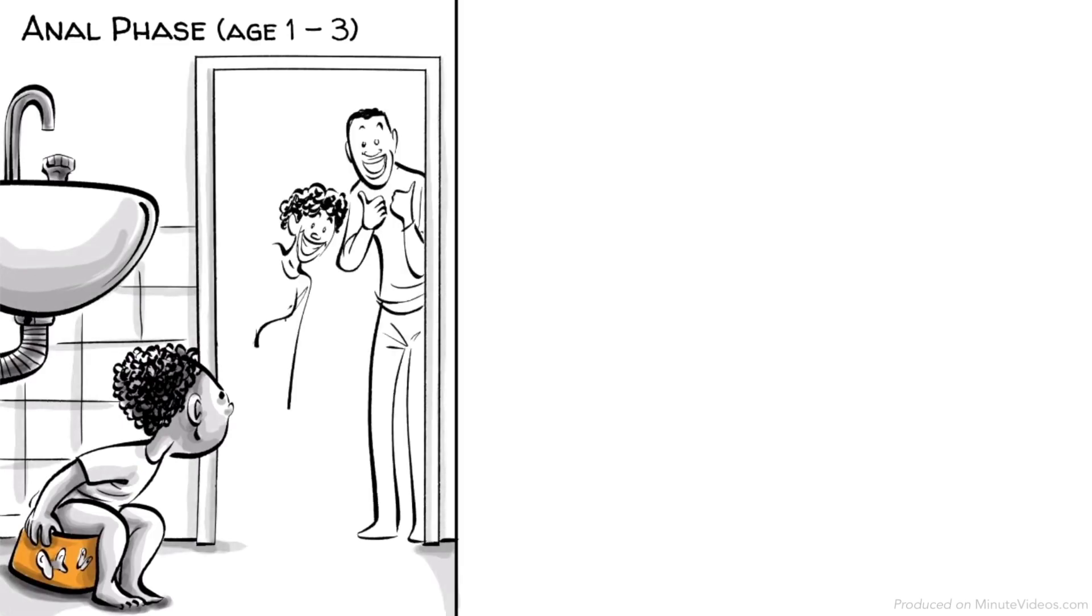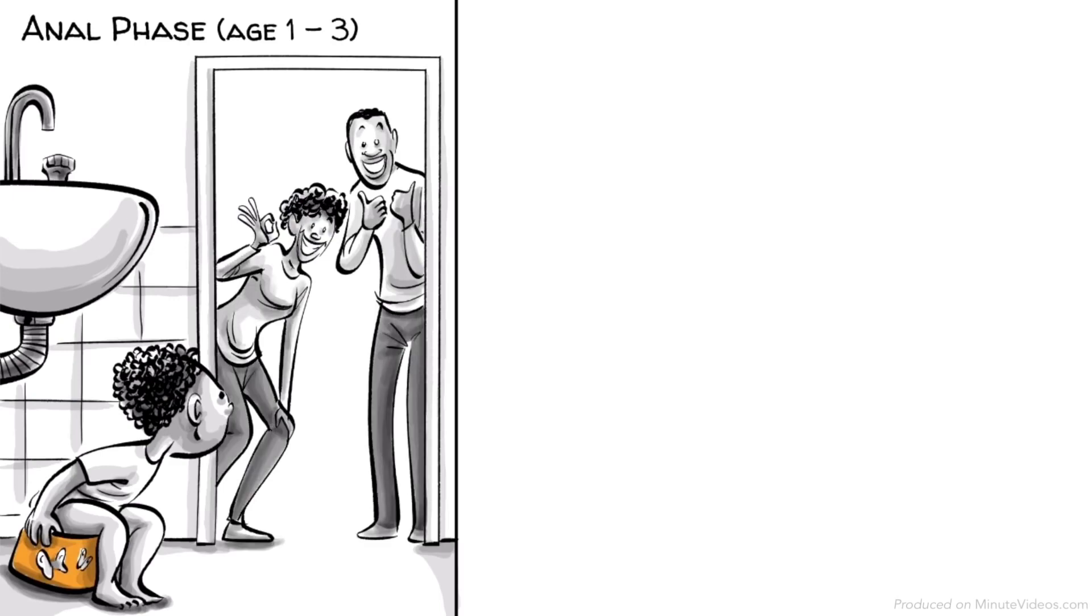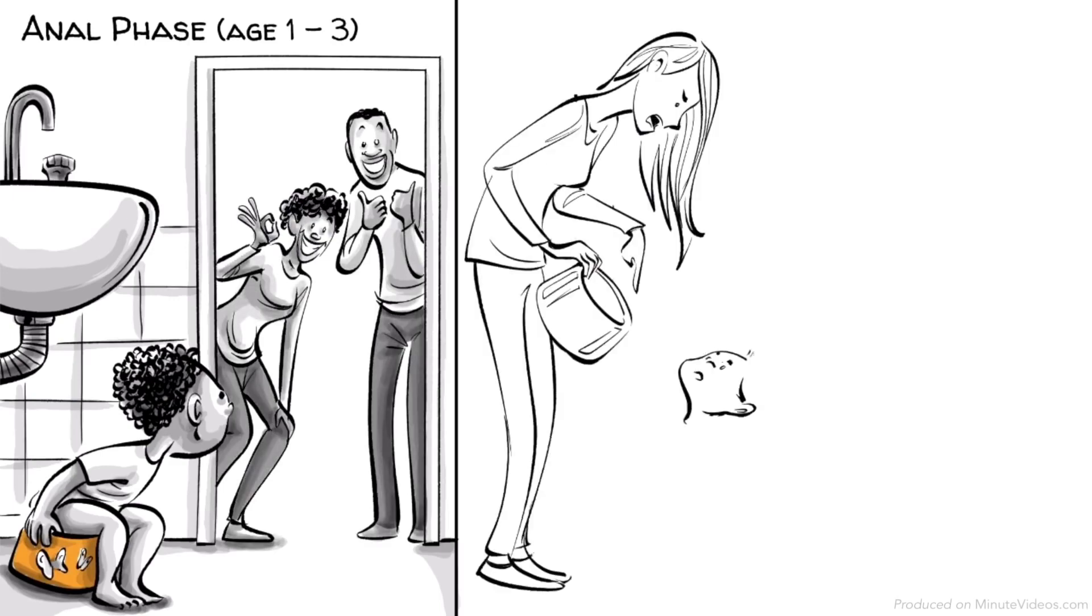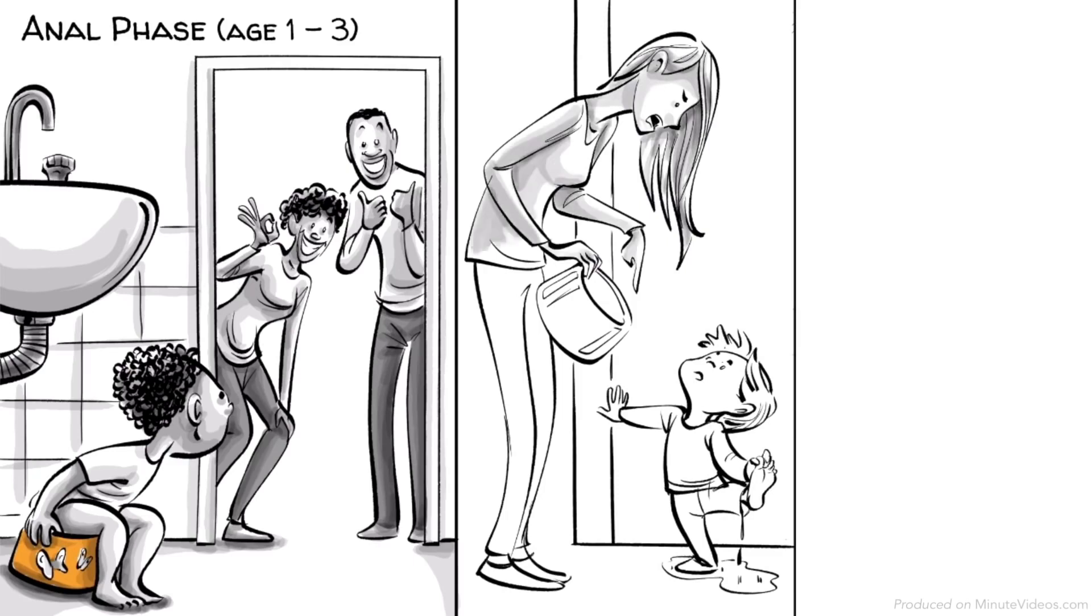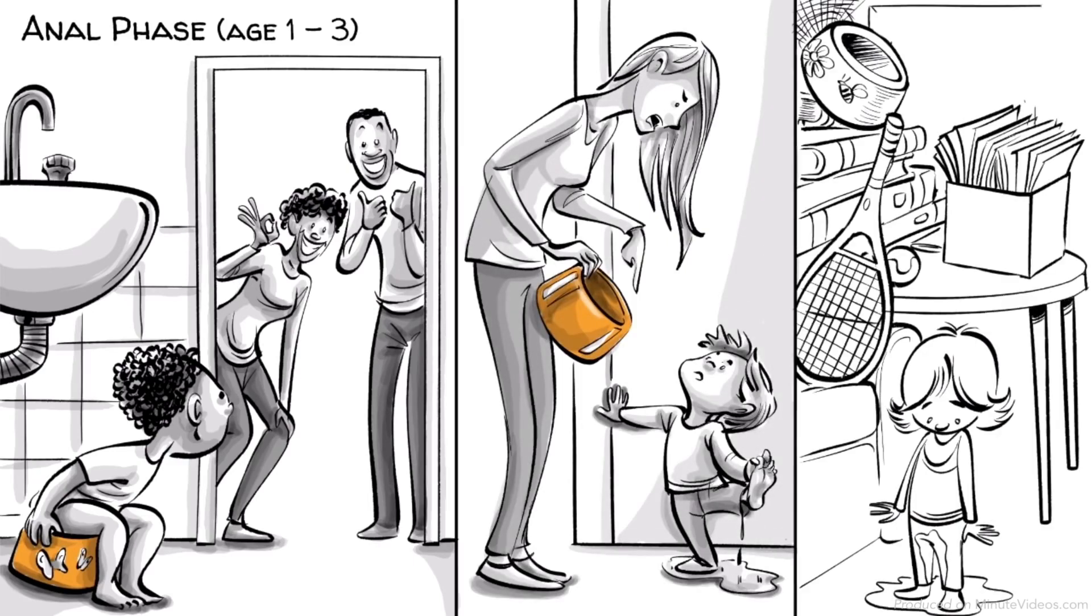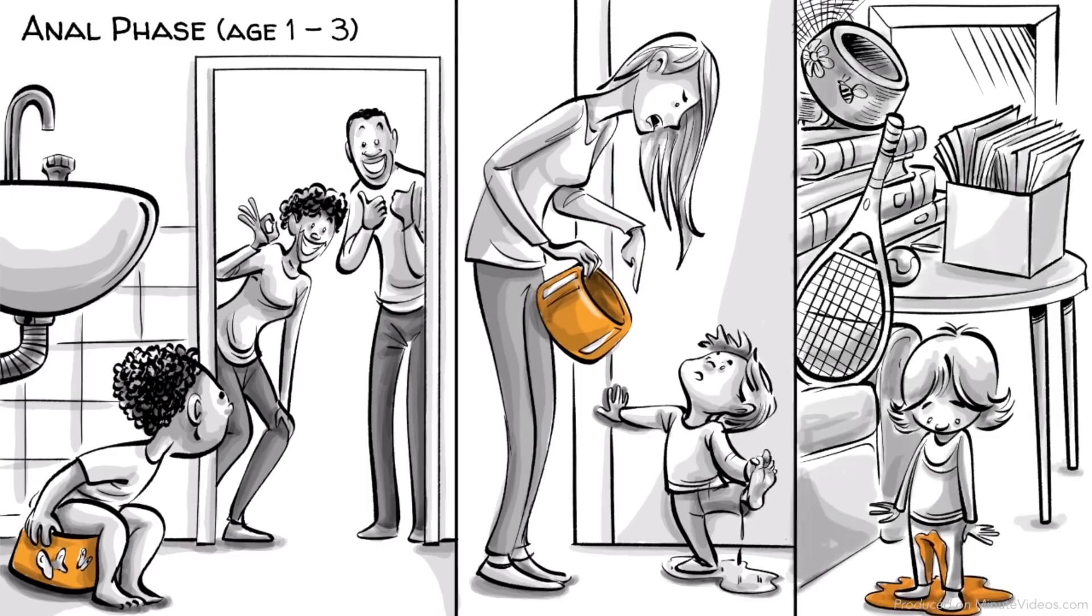Hans's parents praise his attempts to use the toilet and encourage him to learn at his own pace. Ernst's parents force potty training on him too early and punish him for mistakes. Ida's parents neglect any efforts at potty training entirely.